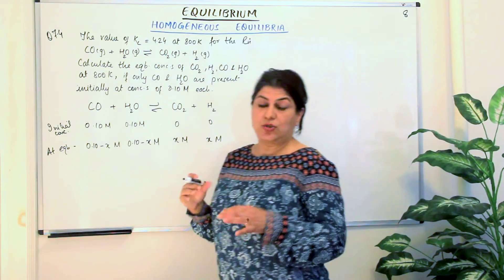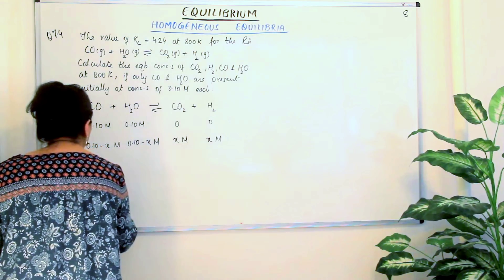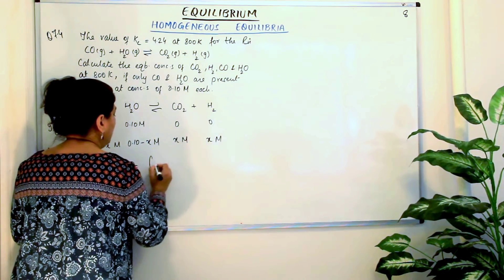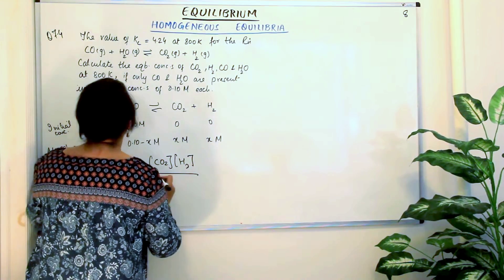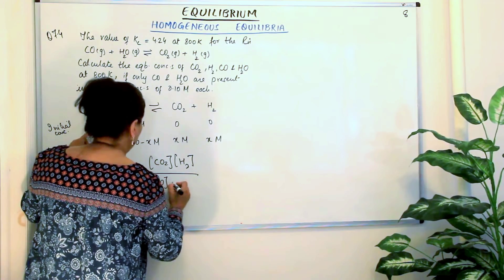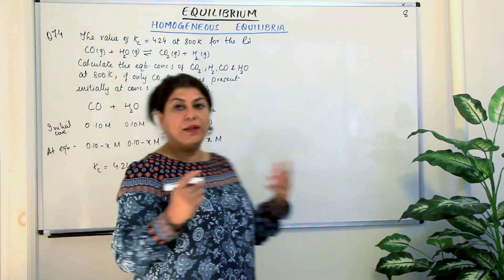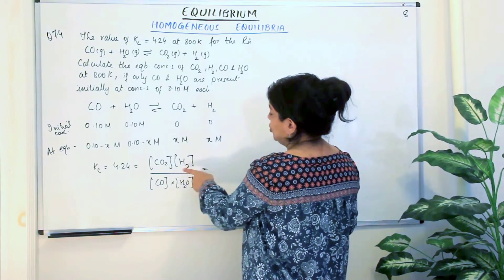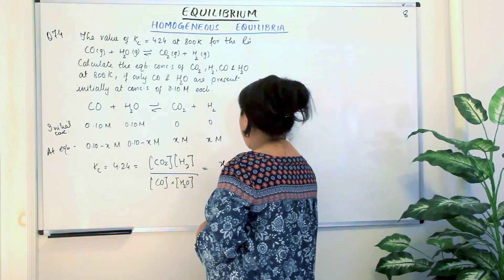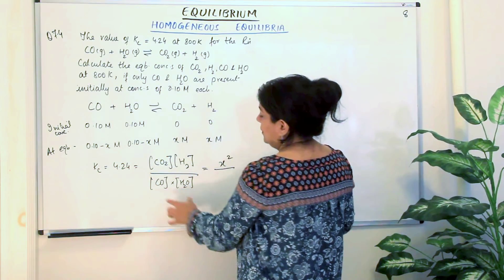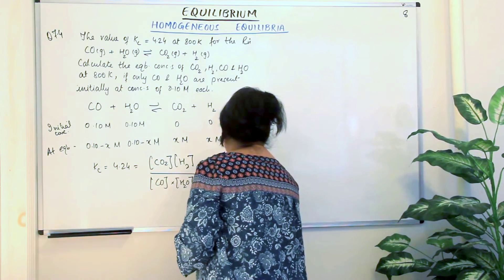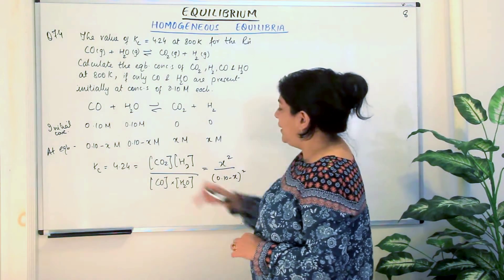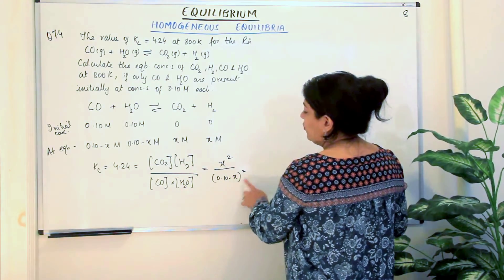Now these are the concentrations at equilibrium. Equilibrium constant Kc is given to us. Kc, which is given as 4.24, is equal to the concentrations of the products — that is CO2 times H2 — upon CO times H2O. All stoichiometric coefficients are 1, therefore there are no powers. The concentration of CO2 and H2 are both x moles, so this becomes x squared upon (0.10 minus x) squared. So the equation we get is: 4.24 equals x squared upon (0.10 minus x) squared.